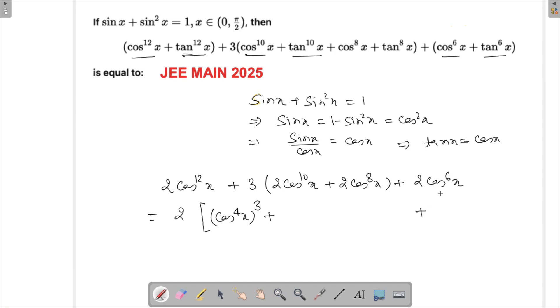So this is cos raised to the power 6x because 2 is taken common. So this will be cos square x raised to the power 3.